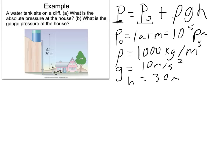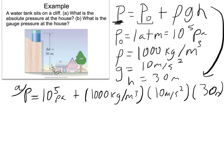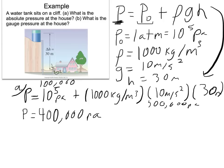Now I'm finding P, the absolute pressure for Part A. My absolute pressure equals 10 to the 5th pascals, plus 1,000 kilograms per meters cubed times 10 meters per second squared times 30 meters. When I do all of that, the gauge pressure term on the right side gives 300,000 pascals. So my absolute pressure is 100,000 plus 300,000, which equals 400,000 pascals.